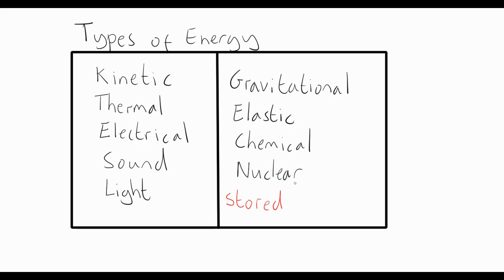A better word for stored energy, and one that you'll hear quite a lot, is potential. So what we say is that the types of energy that are on the right-hand side here are all examples of potential energy: gravitational potential energy, elastic potential energy, chemical potential energy, and nuclear potential energy.